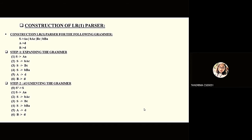Here is our grammar. Step 1 is expanding the grammar. S produces A, S, A. The next step after expanding is to augment the grammar.